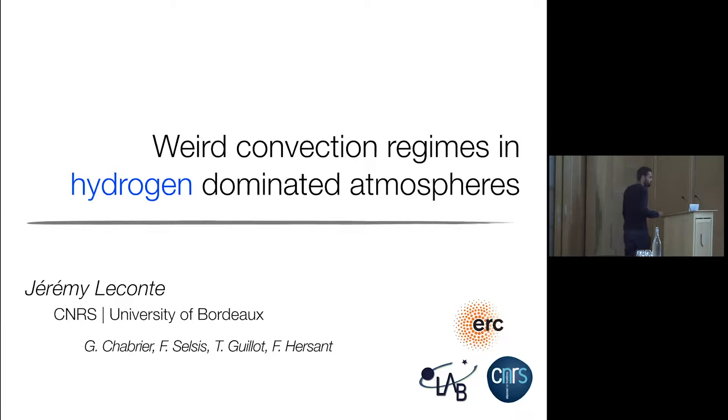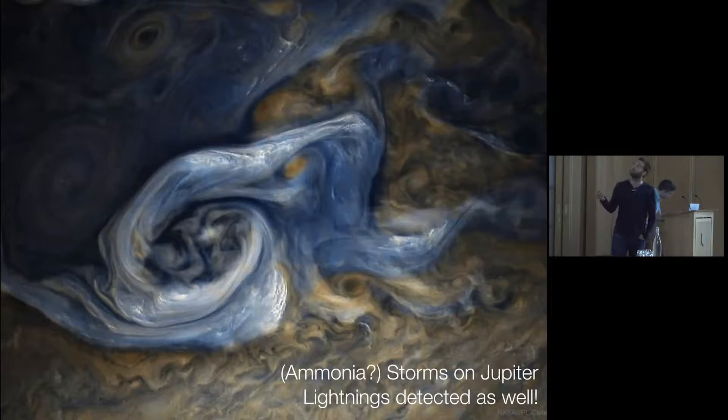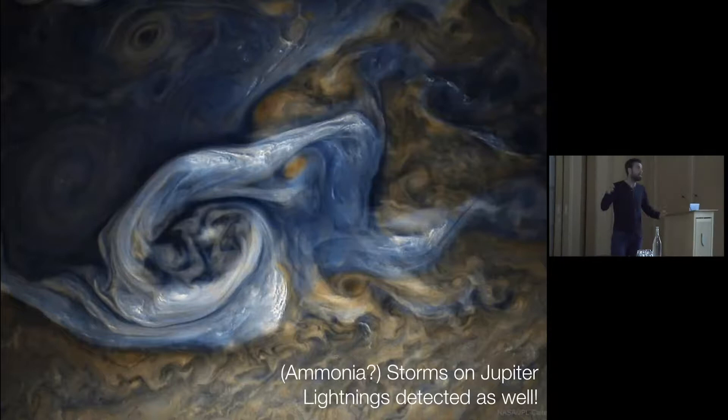So what does happen? Why do you care what could happen if you have convection in a hydrogen-dominated atmosphere? Well, as we saw yesterday, it does happen and we do see it. For example, here is a cyclone on Jupiter. And as we were talking about convection happening on very different scales, the scale of this cyclone is actually the Earth scale — you could fit the Earth in there.